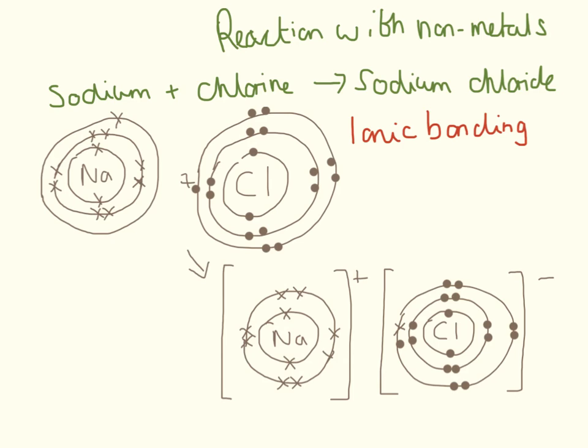And what happens is this electron here goes over to chlorine. Remember that all an atom, an element, wants is to have a full outer shell. So now sodium has a full outer shell by losing that electron, and chlorine has a full outer shell by gaining that electron. And because sodium has lost an electron, it gets a positive charge. And because chlorine has gained an electron, it gets a negative charge.